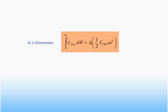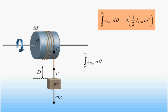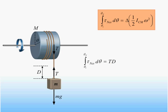This result is actually more familiar than it might seem. For example, if we evaluate the integral of the torque over the angular displacement for the rotating disk on the last slide, we find that it is just equal to the work done by the tension force. Namely, the torque is constant and equal to T times R, while the change in angular displacement as the weight falls through a distance d is just equal to d over R. The product of these two terms is just T times d, the work done by the tension force.